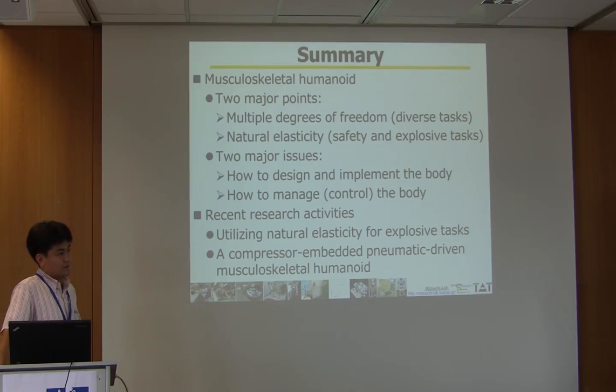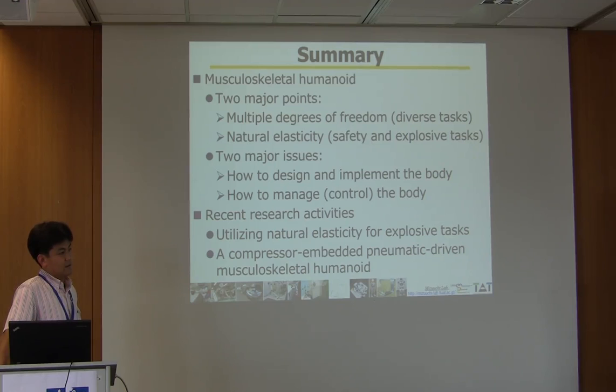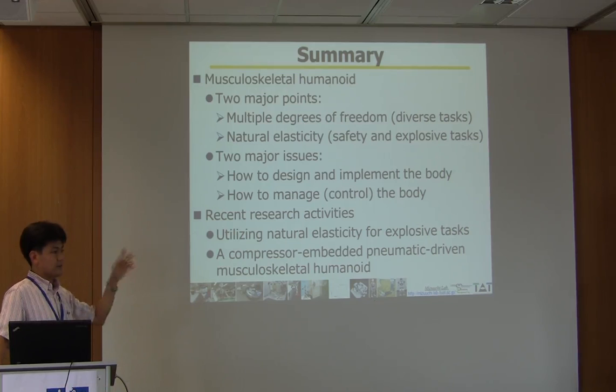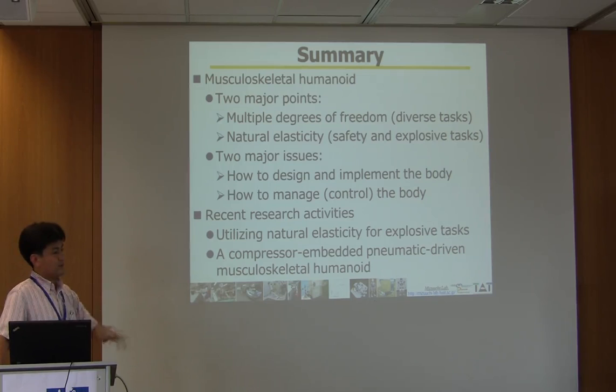Follow-up question: If one link in the spine malfunctions, will the robot still be able to function? Answer: Yes. For example, the robot has 30 degrees of freedom in the spine and 40 muscles for driving it. If one or two muscles are broken, the robot can still move using the other muscles.